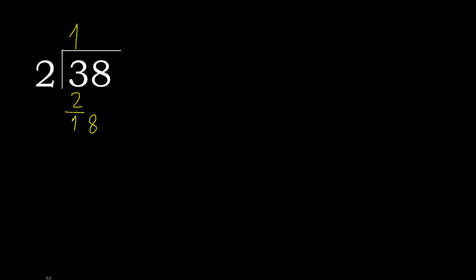Next: 18. 2 multiplied by 9 is 18. It's not greater. 18 minus 18 is 0.